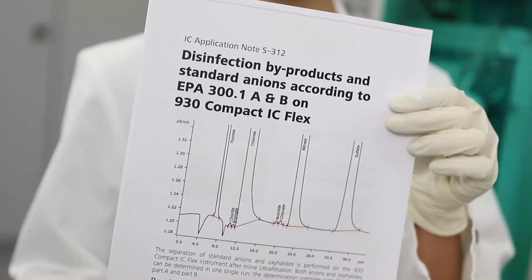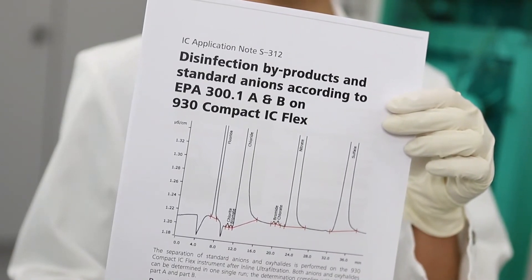The low detection limits achieved comply with standards such as EPA 300.1 A and B, for example. Of course, inline ultrafiltration can be combined with other sample preparation techniques, for example with inline dilution or with partial loop injection. This allows you to configure a fully automated system according to your needs.